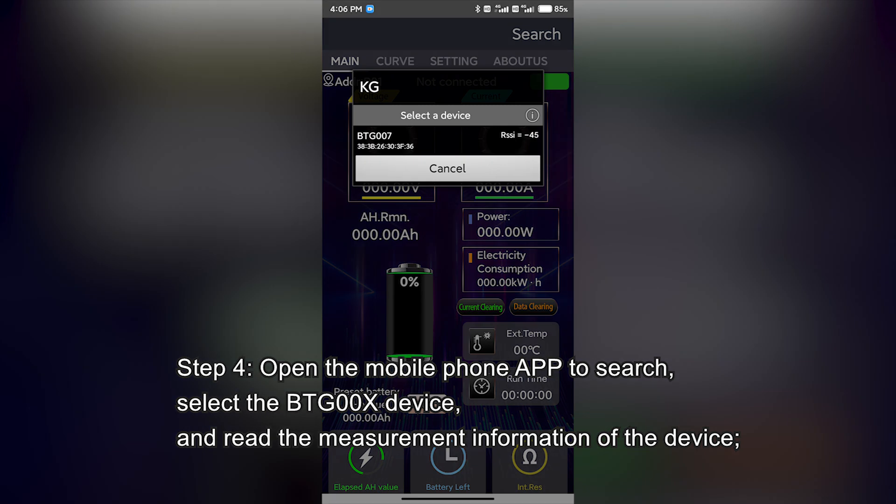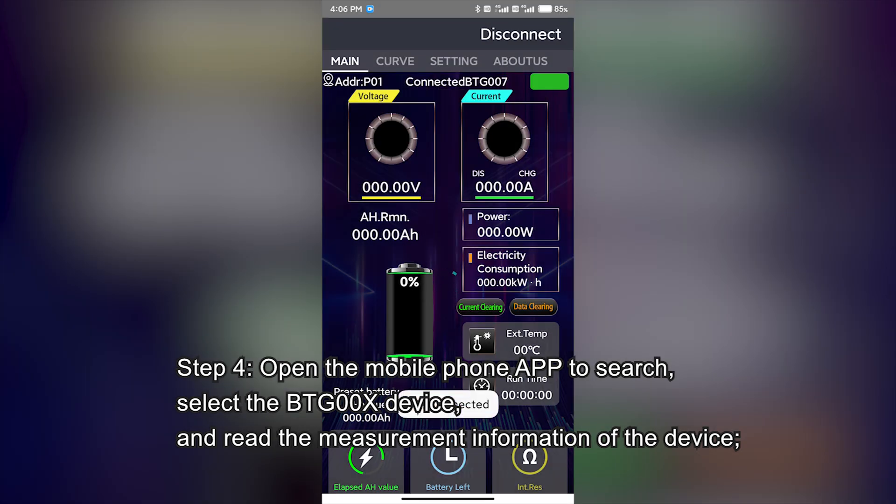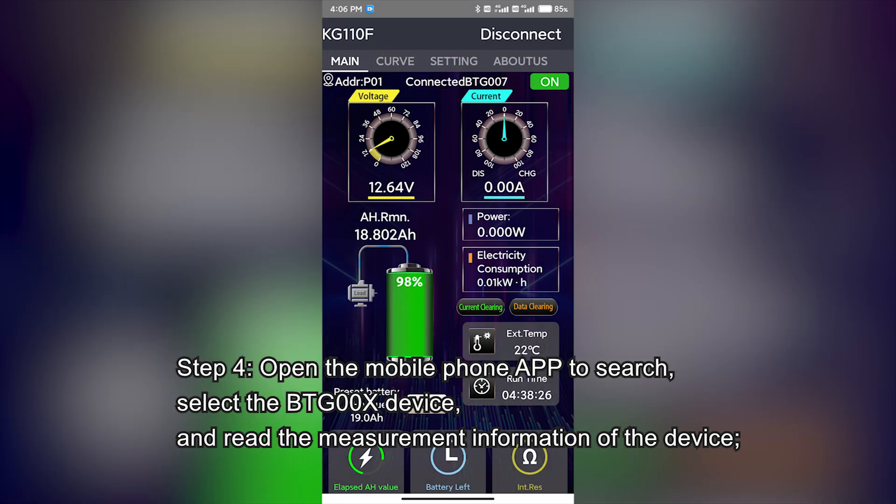Step 4. Open the mobile phone app to search. Select the BTG-00X device and read the measurement information of the device.